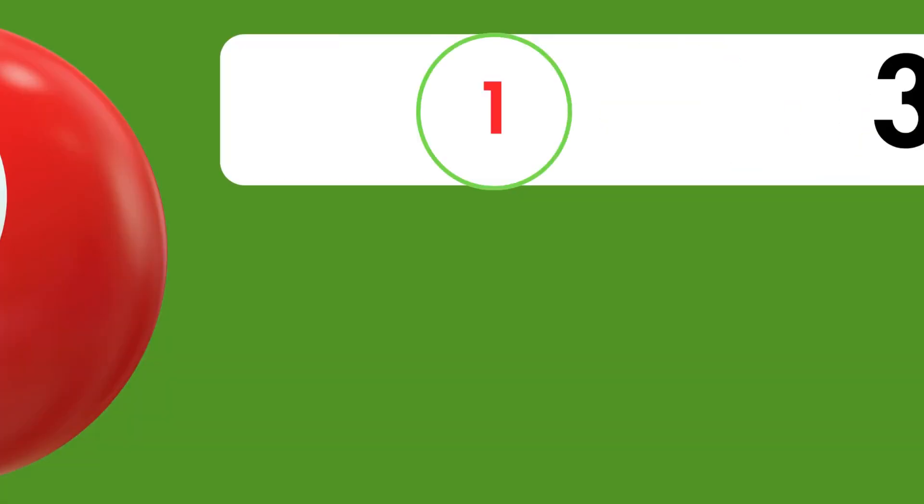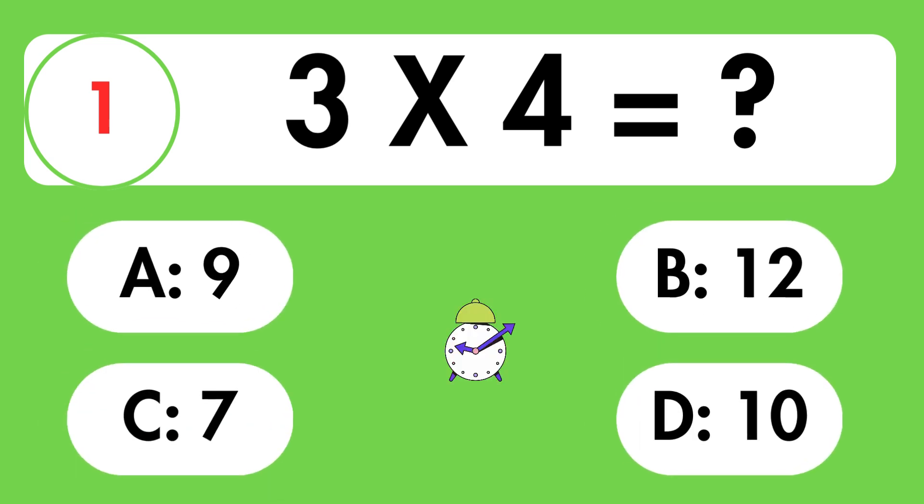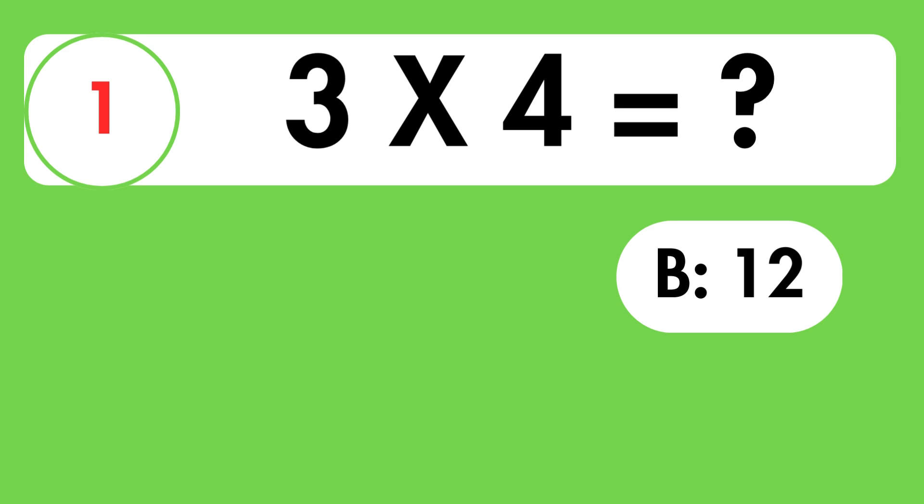Round 1. Let's start with round 1. Question 1. What is 3 times 4? Time's up. The answer is 12.